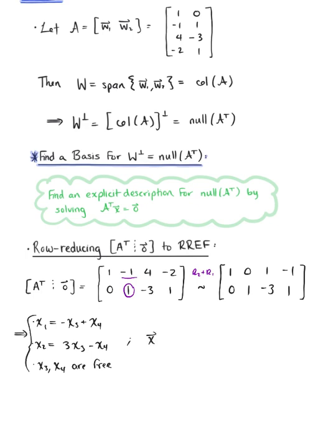So writing this in the parametric vector form, we have vector x, which is a vector in R4. So we have x sub 1, x sub 2, x sub 3, x sub 4.